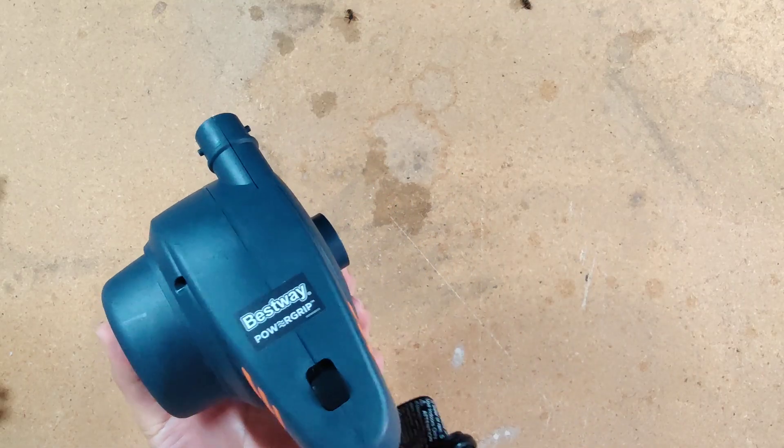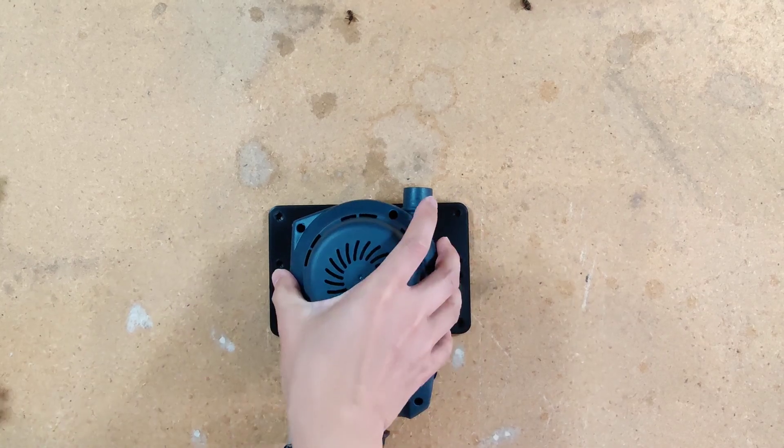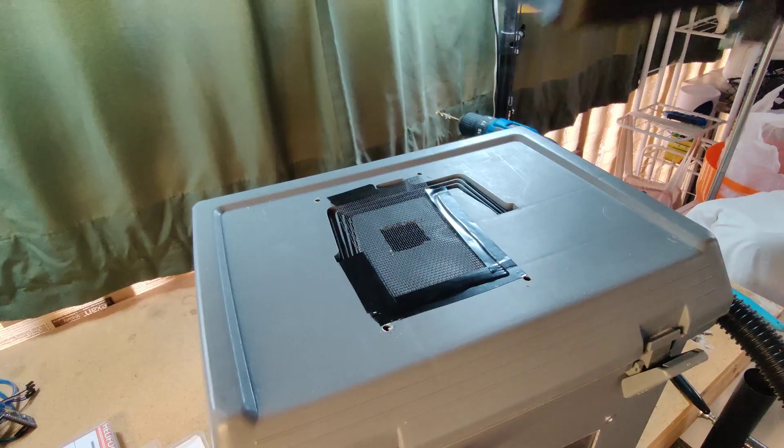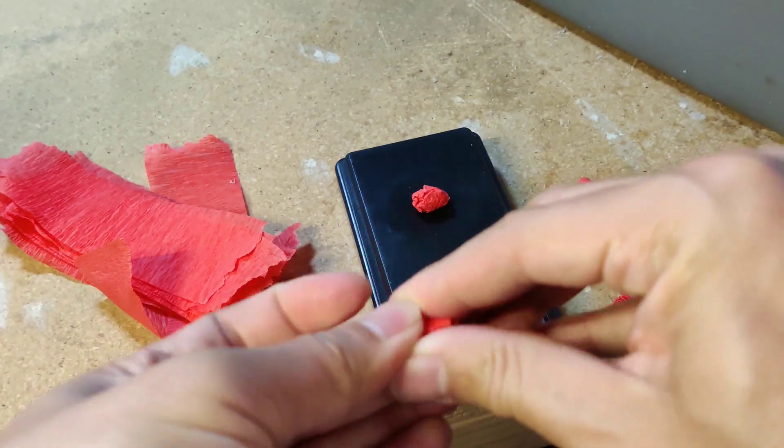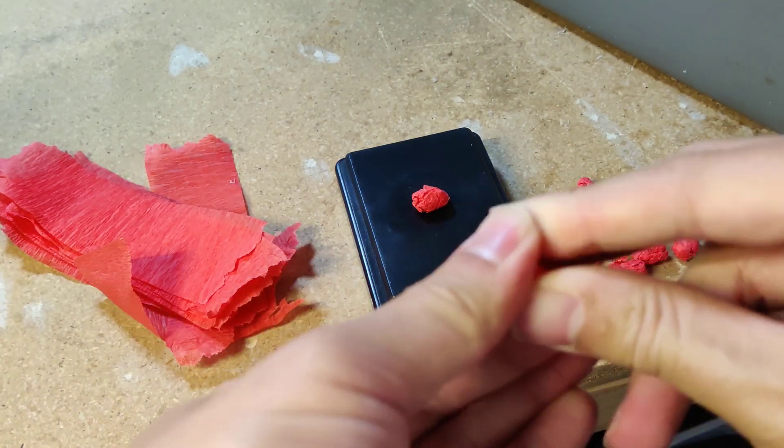We'll use this air mattress pump as the vacuum blower. Let's test it out. We crumpled some streamers to be the size and weight of an average bee.